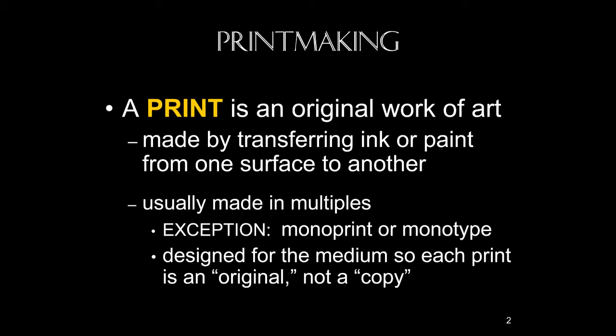Usually we think of a print as made in multiples. However, there are a few exceptions. A monoprint or a monotype is a print that's made when there's only one copy. It's done usually with a flat surface, and there's nothing carved in it or raised up, so you only get one print from that. But we're not going to talk about monotypes in this class. All the types of printmaking we'll talk about are prints that can be created in multiples — in some cases only one survives, but originally there would have been more than one.